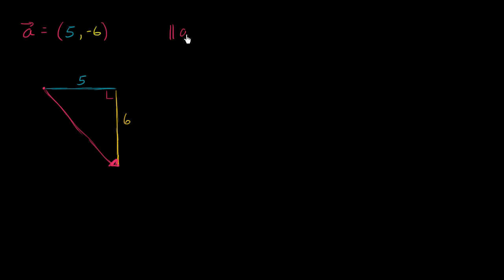So the magnitude of vector a is just going to be equal to the square root. This is coming straight out of the Pythagorean theorem. The square root of 5 squared plus 6 squared, which is equal to the square root of 25 plus 36 is 61. So the length of this arrow right over here is square root of 61, which is a little bit under 8, which actually just makes visual sense.